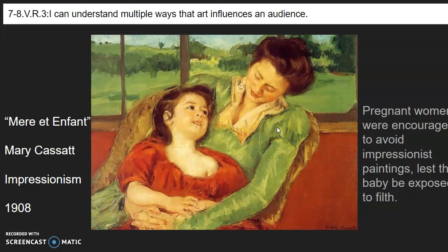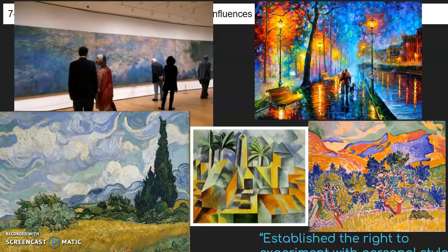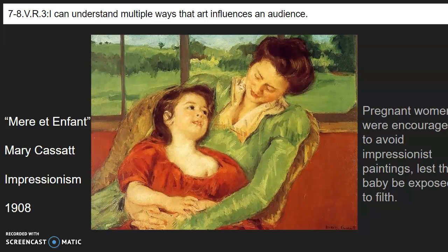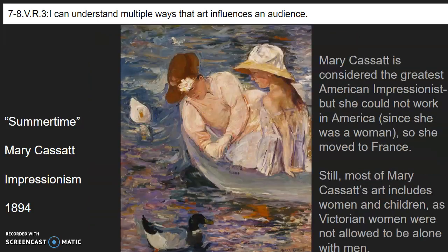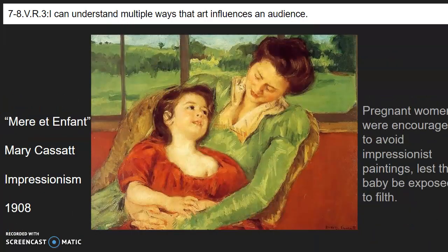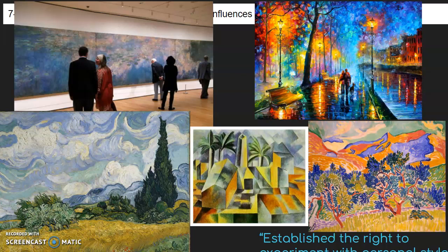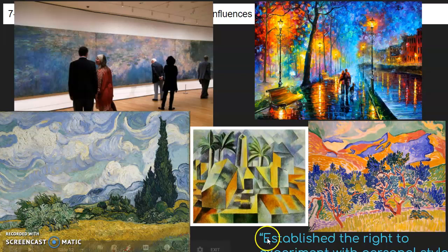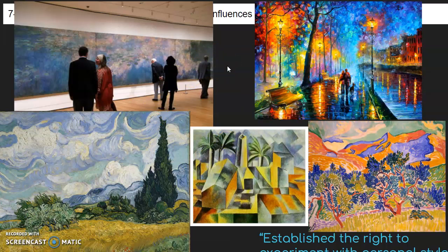Impressionism was hated back then, but not by every single person. Artists like Claude Monet and Mary Cassatt did their work and impacted the world — they established the right to experiment with personal style. Impressionism started all of modern art; it created such an impression on the world that every type of art afterwards was impacted by this idea that you don't have to follow the rule book. You can be creative, use the colors you want. People now travel across the world to see Impressionist paintings in museums.